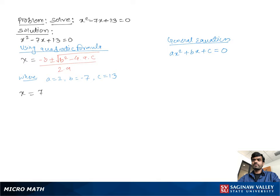Comparing the original equation with the general equation, we get a is equal to 1, b is equal to negative 7, and c is equal to 13.